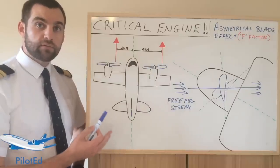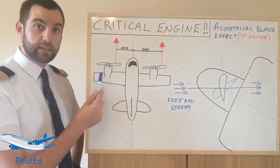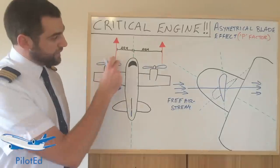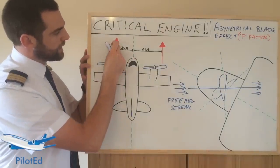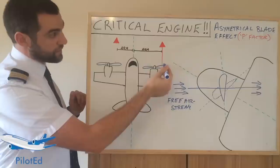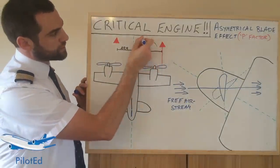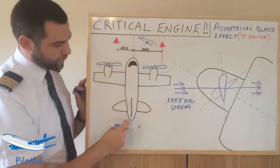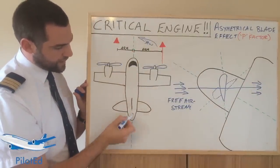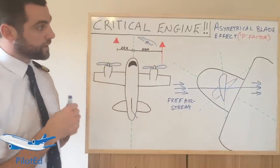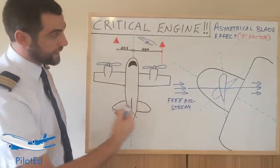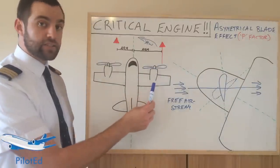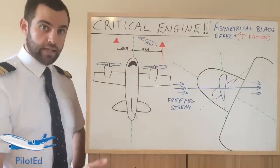In a scenario where the critical engine fails — in this case the left engine — that would generate the biggest yawing moment to the left. If the left engine failed, we would lose that thrust vector. That would give us a big yawing moment to the left. How would we counteract that? We would have to apply right rudder to counteract that yawing moment and bring the nose back to the right again. As you can see, we would be stepping on the right pedal, which is the live engine side.